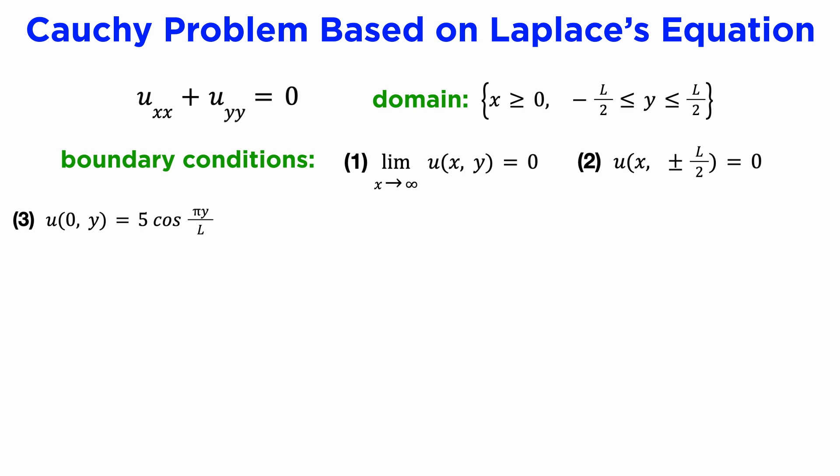If we add the Dirichlet initial condition u of 0y equals 5 cosine pi y over L, we can make it well posed and finish this off. Subbing in x equals 0 tells us that only one of our basis functions now has the correct frequency.